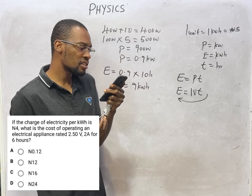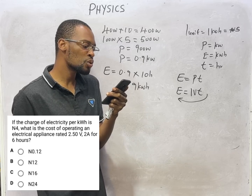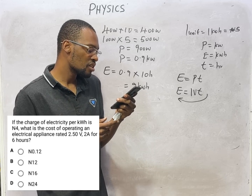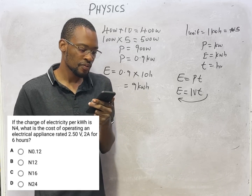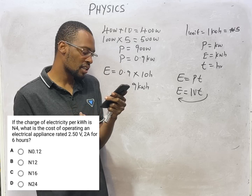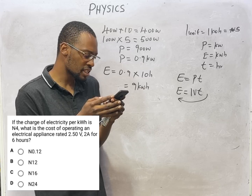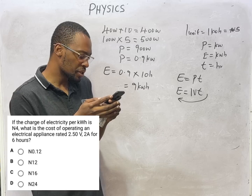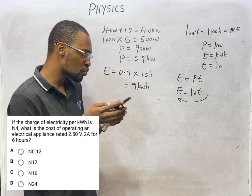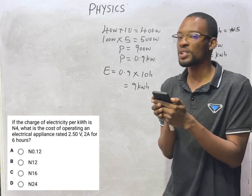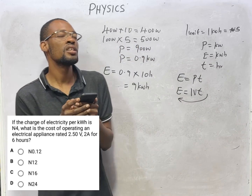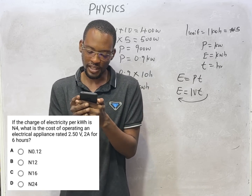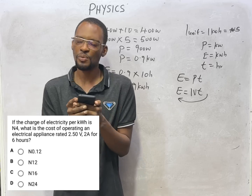Current is 2 ampere and voltage is 2.5 volts, so 2 times 2.5 is your power. The time is 6 hours. When you multiply, you get energy equal to 30 watt hours. But there is a problem: the power we got by multiplying 2 times 2.5 is in watts, so we convert it to kilowatt. 5 watts divided by 1000 gives 0.005 kilowatt. Multiply that by 6 hours and you get 0.03 kilowatt hours.